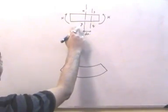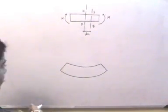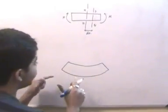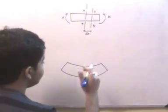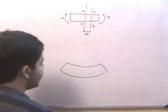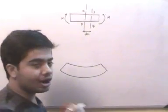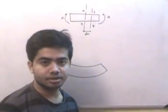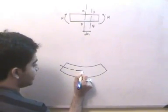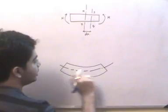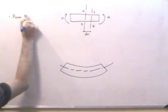The element is subjected to moment M and will bend. We can see that the top fibers will be in compression and the bottom fibers will be in tension — that is, the top fibers will get shortened whereas the bottom fibers will get elongated. In between the top and bottom fibers there will be a layer at which there is no change in dimension, and this layer is called the neutral layer.